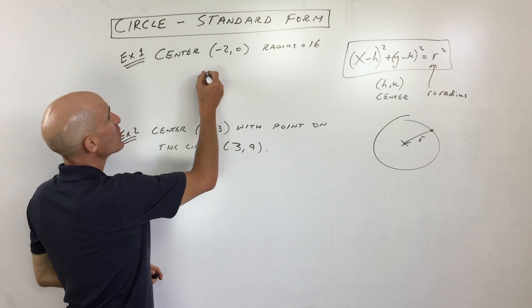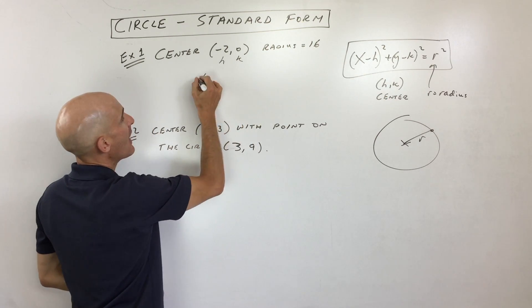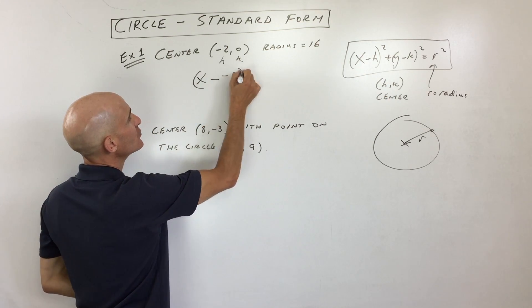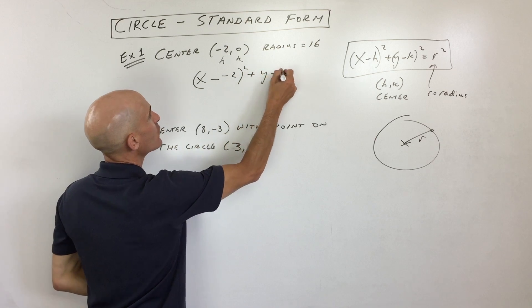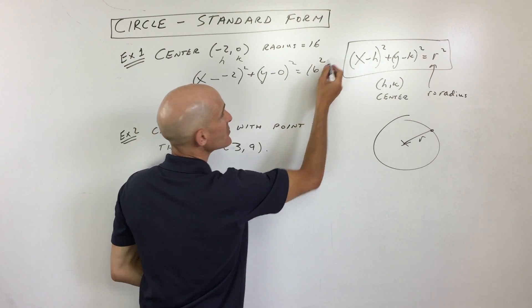So what we want to do is put those values in here. This is our h and this is our k. So we have x minus negative two squared plus y minus zero squared equals the radius squared, so 16 squared.